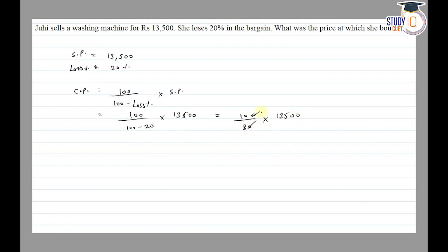So zeros cancel out, so we have upon 8. So 8 ones are 8 and 55, 8 6 are 48, then 8 8's are 64, then 8 7's are 56, then 40, then 8 5's are 40. We have 16,875 rupees.